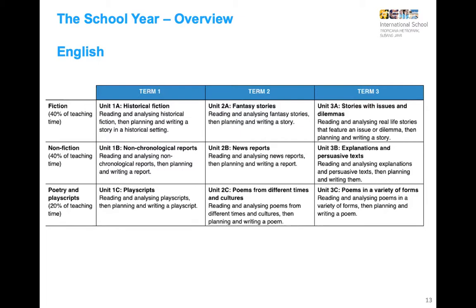In the final term, the first unit covers stories about issues and dilemmas — bullying, friendship, and relationship topics — culminating in a story. The second unit covers explanations and persuasive texts, including advertisements. Finally, children read and write poems in a variety of forms, from shape poems to nursery rhymes.